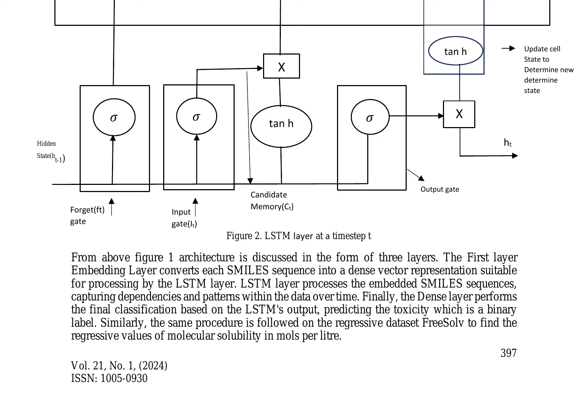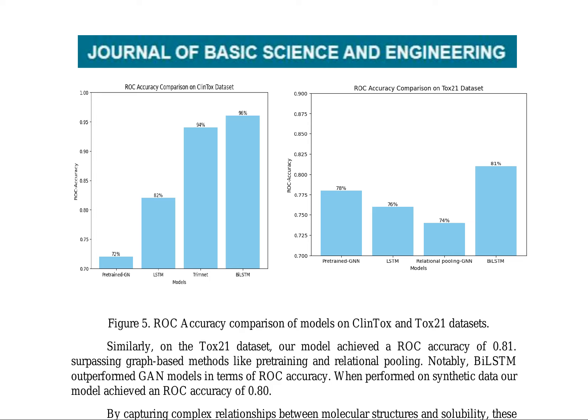The update cell state and hidden state are determined using equations involving the cell state, hidden state, and input gate. The bidirectional LSTM architecture is also explored, which passes information bidirectionally, capturing both past and future dependencies in the SMILES sequences.